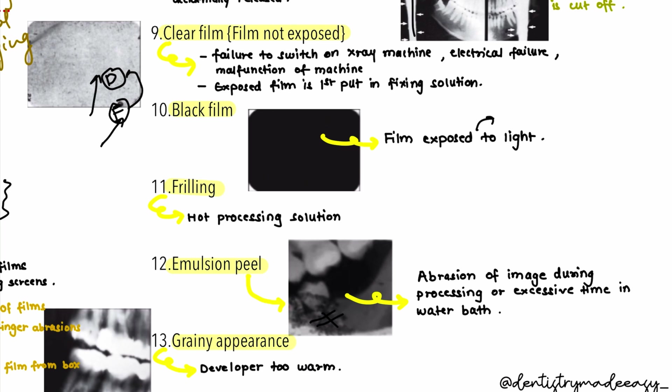The last part of this series will cover automatic processing errors, miscellaneous errors, and actual IOPA films showing combinations of errors in a single film — because it is not always one error per film; there can be two, three, or more errors together. That was all about processing errors for this part. I hope you found this video helpful — please like, comment, share, and subscribe. Thank you.